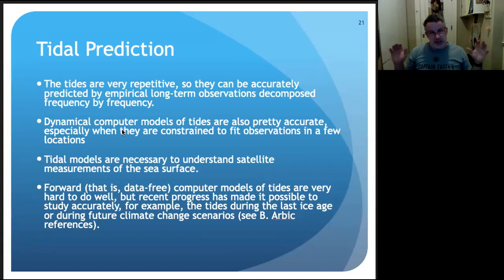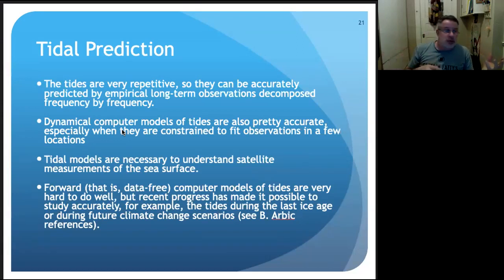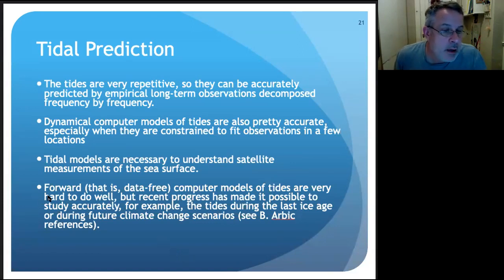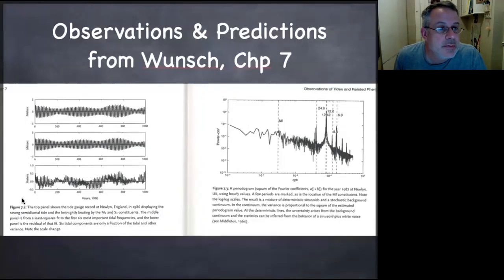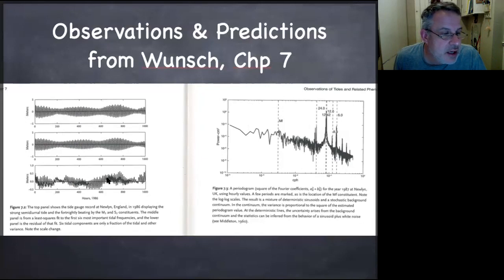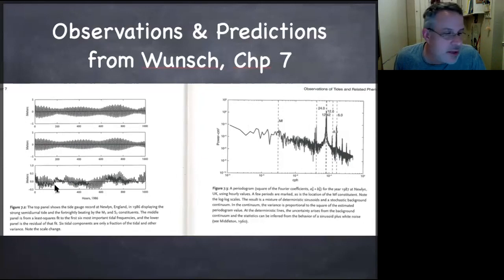The advantage of dynamical computer models is you can put together the tides with changes in the currents, changes in the winds, changes in storm surge, and get an even better prediction of what's coming. Here are some observations and predictions of the tides — the incoherent part of the tide has to do with other things like changes in the winds and storm surge.